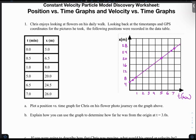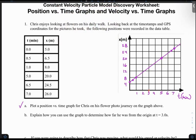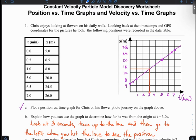All right, so once you've done that, I've plotted the position versus time graph. Now I need to explain how I can use the graph to determine how far he was from the origin at three seconds. So I'm going to look at this, and at three seconds, I'm going to follow this up and then follow it over. And that looks like it's about 14. So I describe it as look at three seconds, trace up to the line, and then go to the left when you hit the line to see the position.